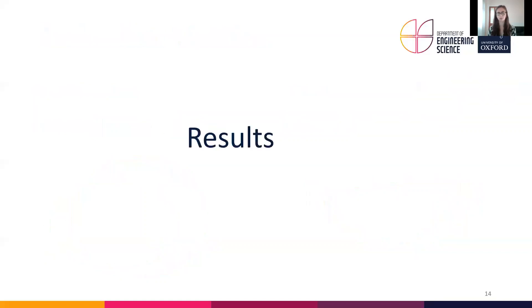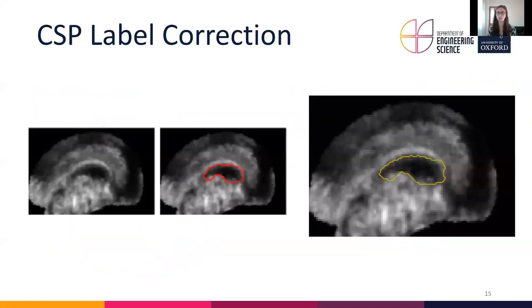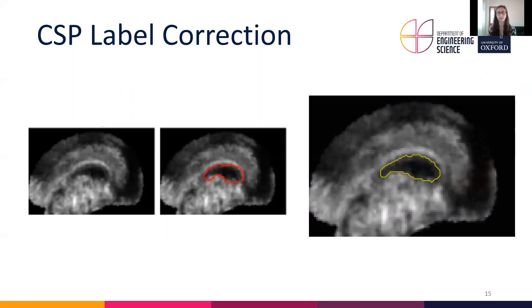What are our results? To start, how did the label correction look? On the left you see the original slice of a volume, in the middle the initial noisy label, and on the right you can see the contour evolution. After evolution, the resulting contour aligns way better with the image edges.